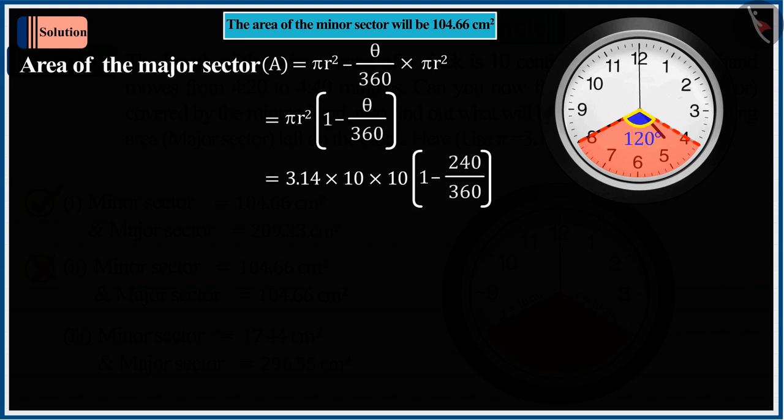Because in place of the minor sector, you considered the remaining angle and forgot that you have to subtract the area of the minor sector from the total area, for which you have to take the value of theta as 120 degrees only.